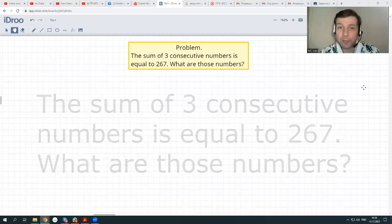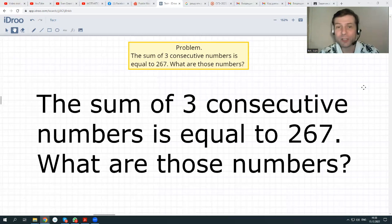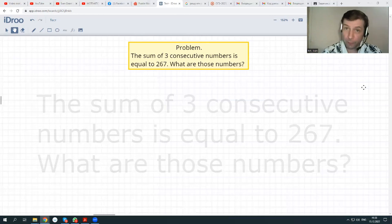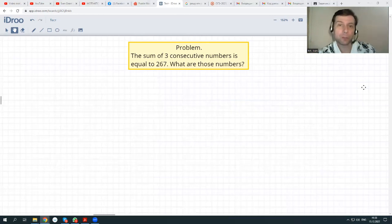Here we have the sum of three consecutive numbers is equal to 267. What are those numbers? We do not know any of them. And many students usually say, I just start picking them up. And step by step, I found these numbers like 7, 8 and 9. But sometimes it would take great amount of time. What we could do if we don't know anything about those numbers, we could just assign letter x for some of them.